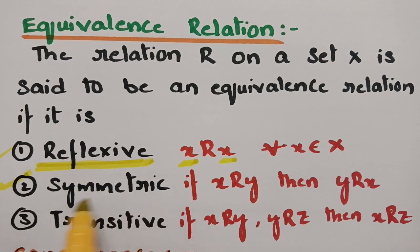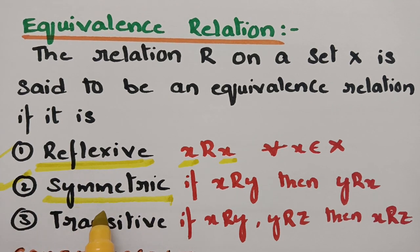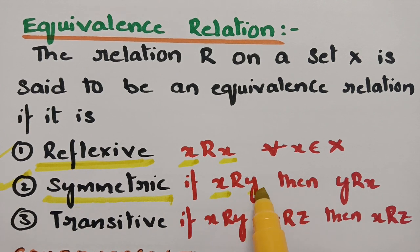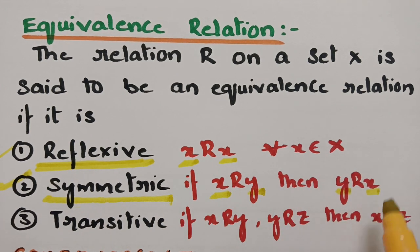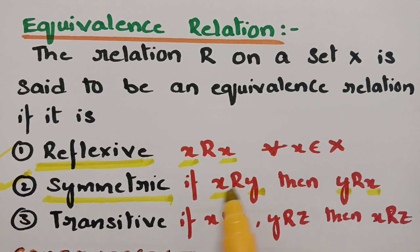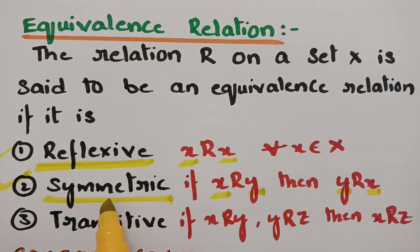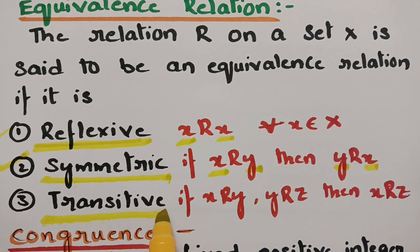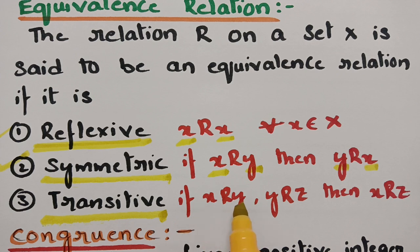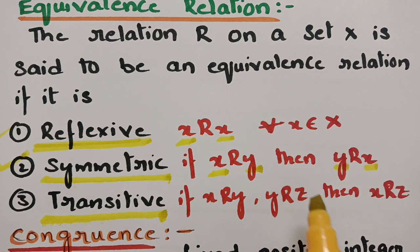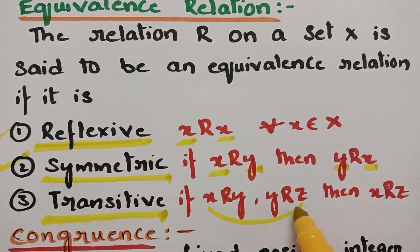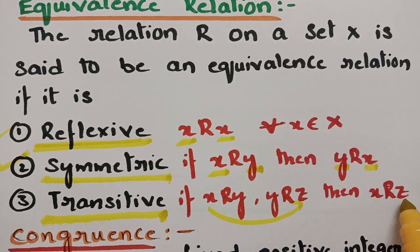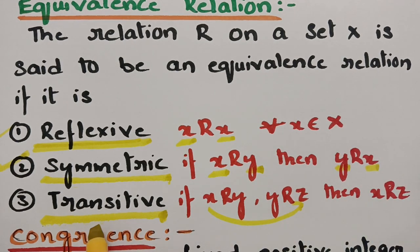The next property is symmetric: if x is related to y, then y is related to x — then we say the relation is symmetric. And the next one is transitive: if x is related to y, and y is related to z, then x is related to z — then we say that the relation R is transitive.